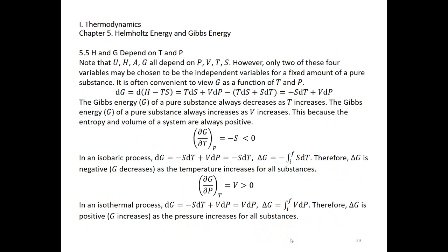U, H, G, and A all depend on P, V, T, and S, but only two may be chosen as independent variables for a fixed amount of pure substance. If you can change the amount of substance, there will be three independent variables. It's very convenient to view G as a function of T and P. DG = DH - D(TS); DH = TdS + VdP; D(TS) = TdS + SdT. Canceling TdS gives DG = -SdT + VdP. So δG/δT = -S at constant pressure, and δG/δP = V at constant temperature.